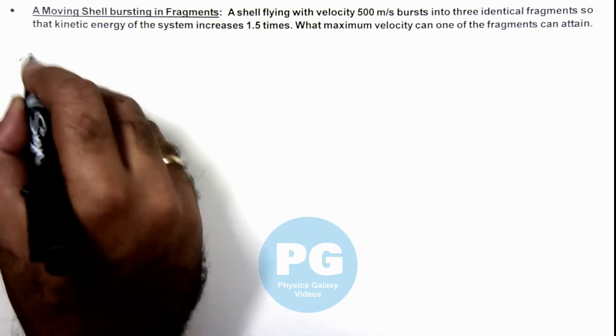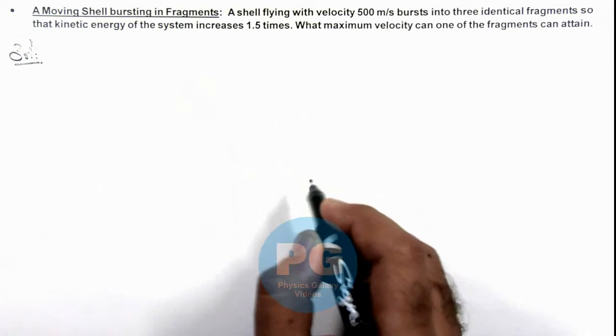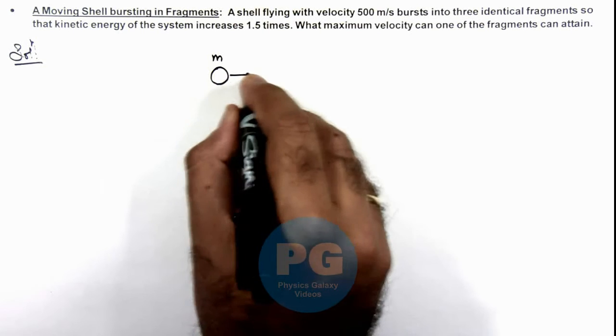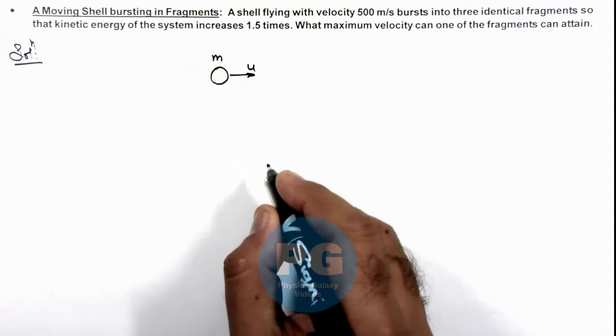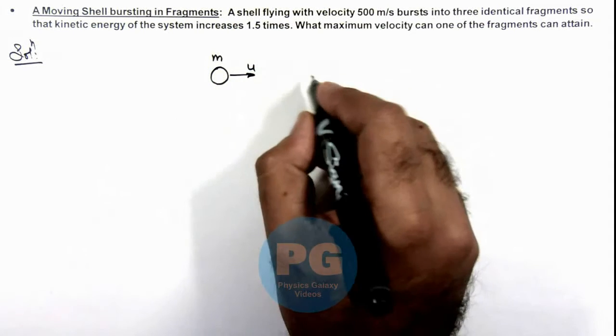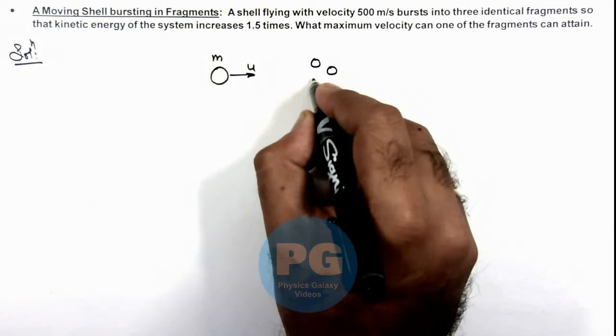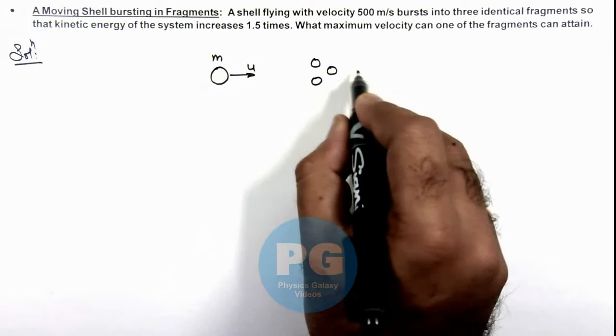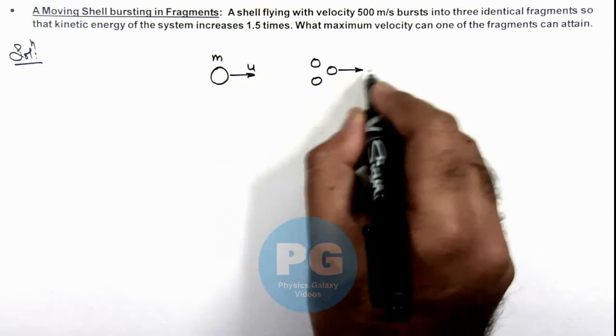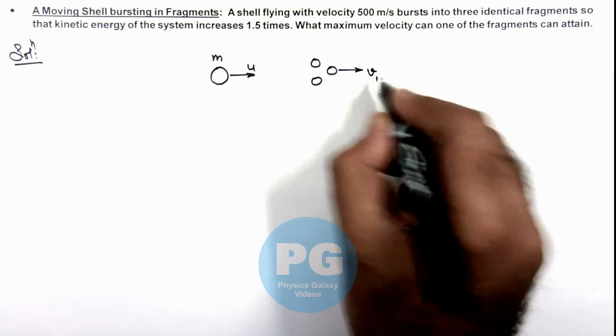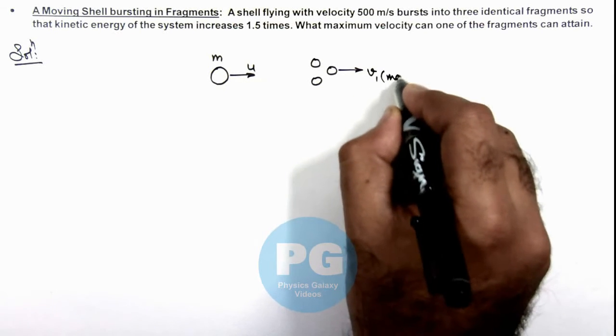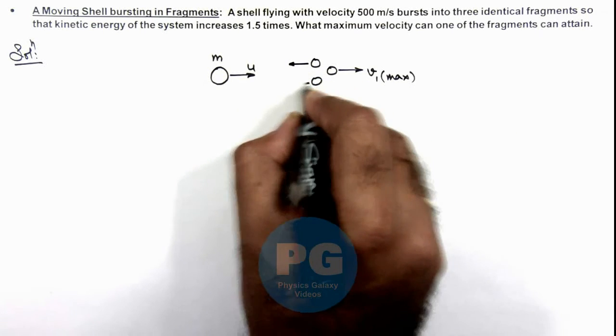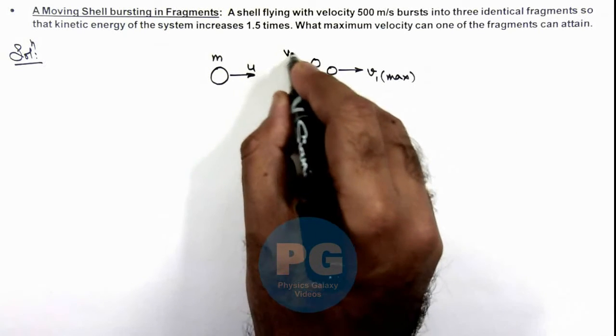In solution, if we draw the situation we can see a shell of mass m is flying with a speed u. If it splits in 3 identical fragments, then one fragment can attain maximum velocity which is moving in the direction of motion. Say this is moving at speed v₁ which is maximum. And for it to be maximum, the other two must move in the direction opposite to motion with velocity v₂ and v₂.